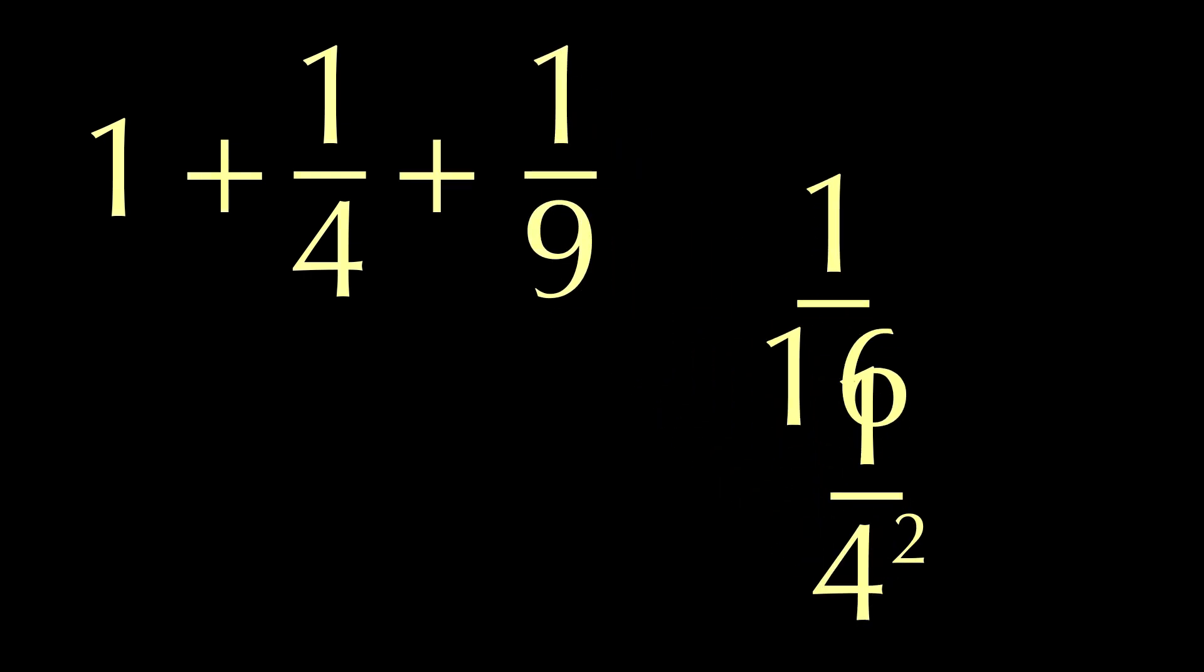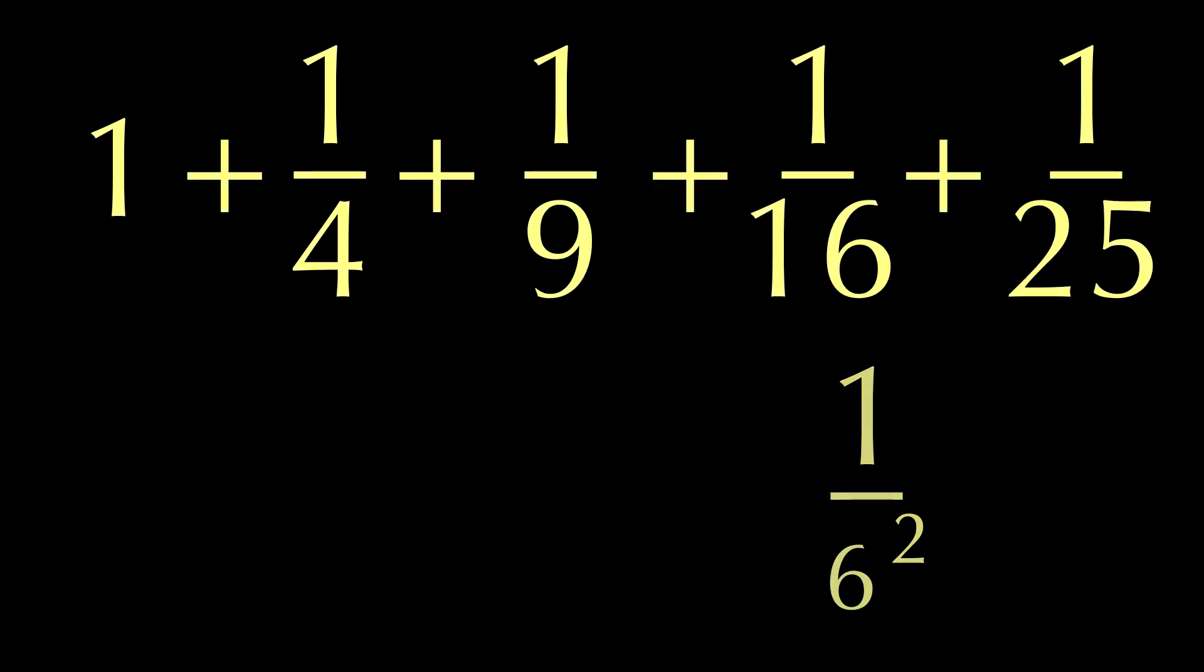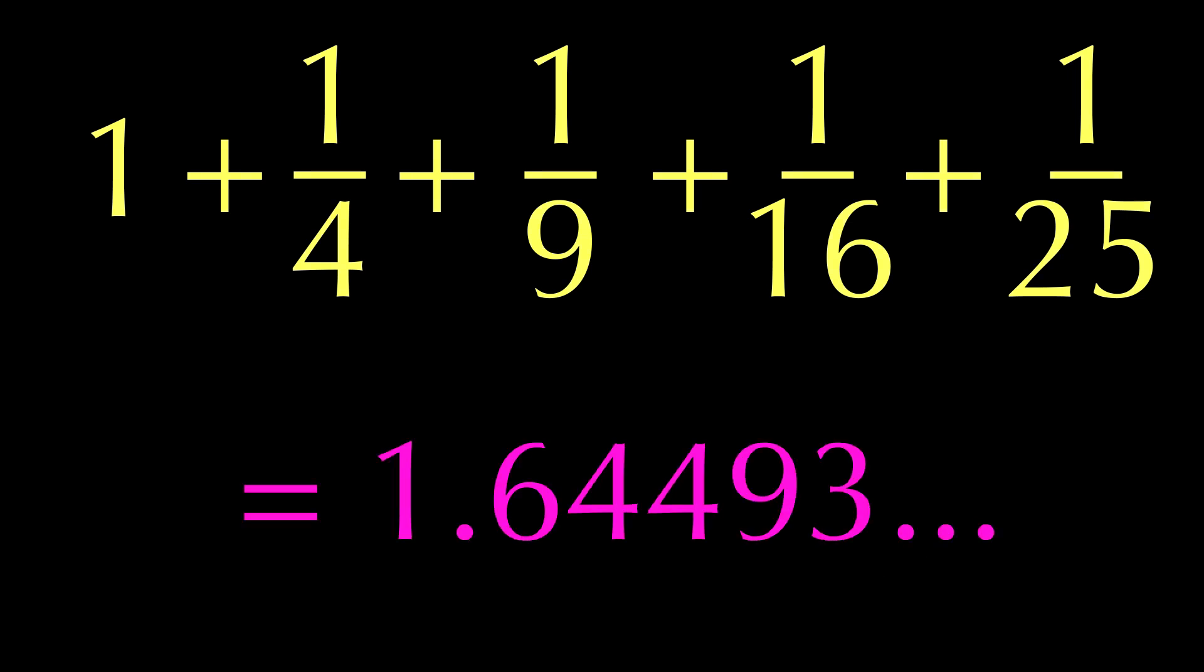Well, let's say we have 1 over x, and then decide to square the x. We can now plug consecutive numbers for x and start adding these fractions together. If we could do this for infinity, we would get this irrational number 1.64493 and so on.